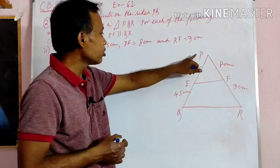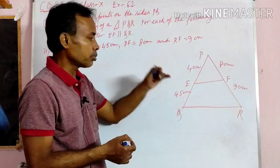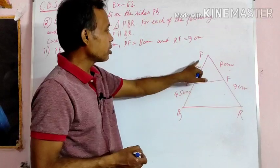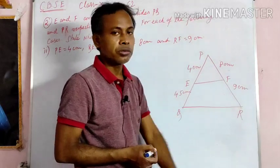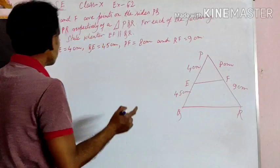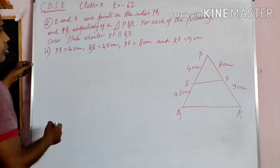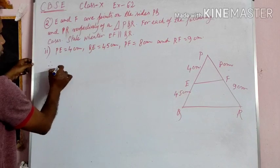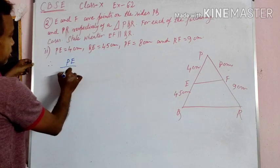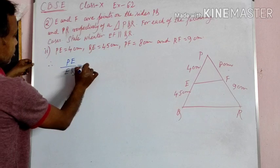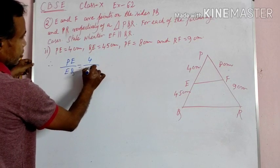Given: PE equals 4 cm, EQ equals 4.5 cm, PF equals 8 cm, and FR equals 9 cm. Let us check whether EF is parallel to QR. PE by EQ equals 4 by 4.5.